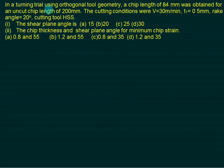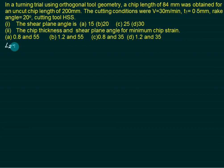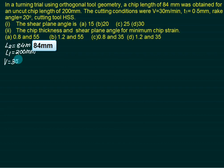In a turning trial using orthogonal tool geometry, a chip length of 84 mm was obtained for an uncut chip length of 200 mm. The cutting conditions are: cutting velocity 30 m/min, uncut chip thickness T1 equals 0.5 mm, and rake angle gamma equals 20 degrees. We need to find the shear angle, chip thickness, and the shear plane angle for minimum chip strain.